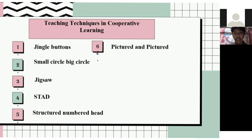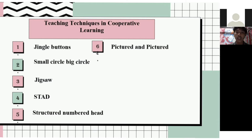The next technique is Small Circle Big Circle. This approach can be used in a number of subjects such as science, social science, religion, mathematics, and language. The next technique is Jigsaw, which can also be used in several subjects. In this technique the teacher pays attention to the background experience of the student and helps students achieve their schemata so that lesson material becomes more meaningful.